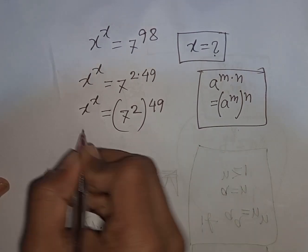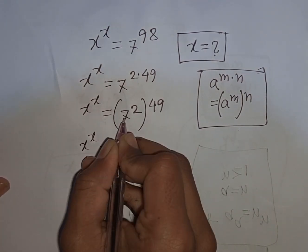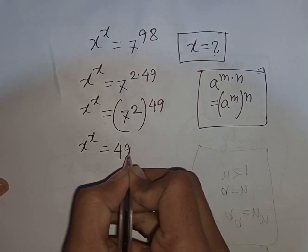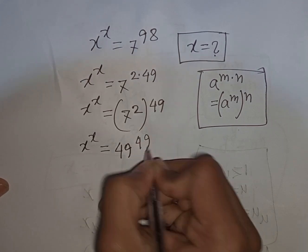Now you can write here x to the power x equals 7 to the power 2, that means it will be 49, then power of 49.